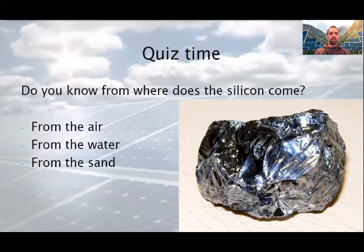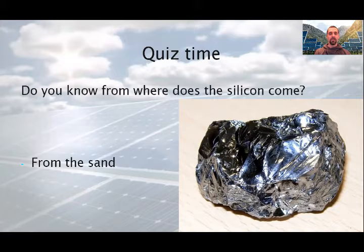As I said before, we will study the different types of solar systems. Nowadays, the most common solar cells are silicon-based. So, this is the basic component of most solar cells. Do you know from where does the silicon come? You should remember from the previous video. Does it come from the air or from the water or from the sand? It comes from the sand. So, we have a very abundant source of it.